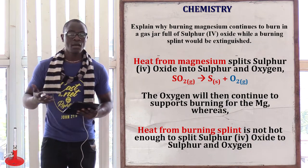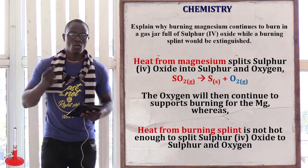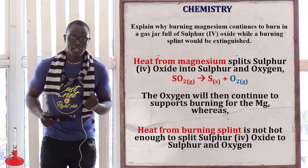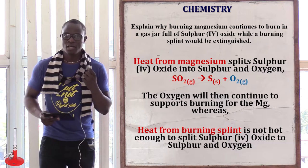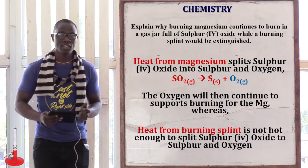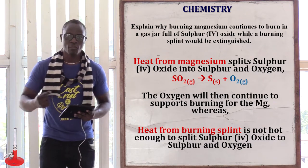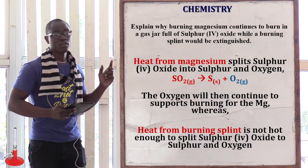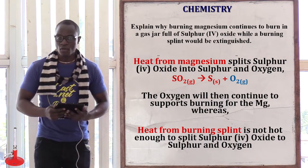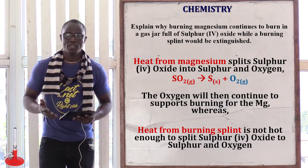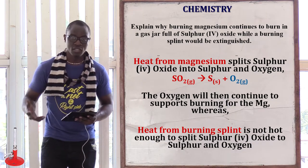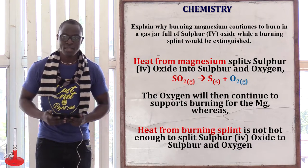However, a burning splint produces very low energy during burning. Since it produces very low energy, the energy is not able to break down the sulfur dioxide to sulfur and oxygen molecules. Since this happens, the sulfur dioxide is going to extinguish the burning splint.